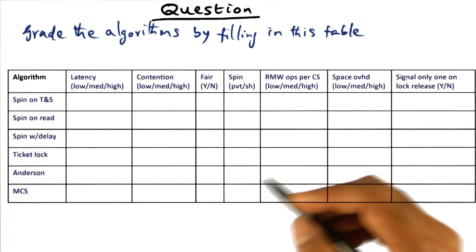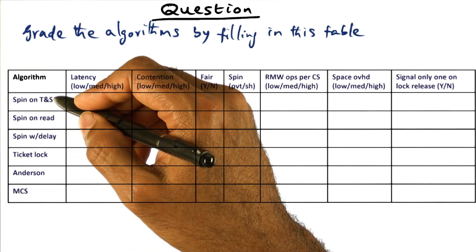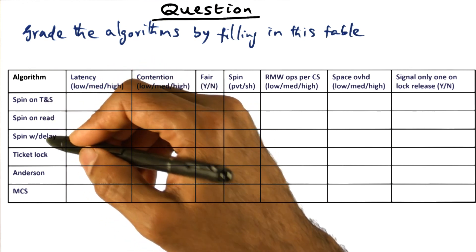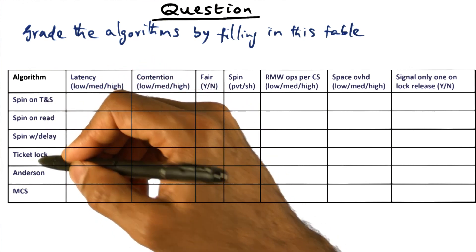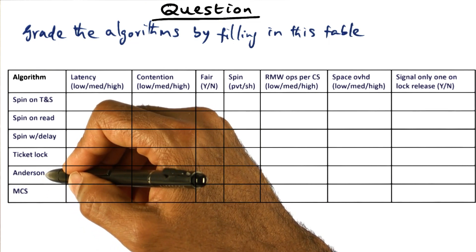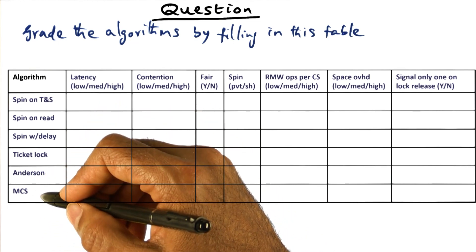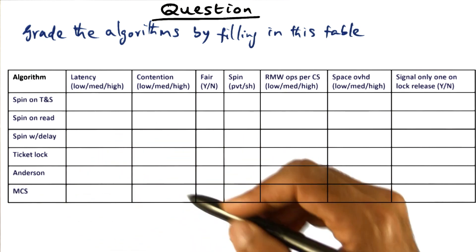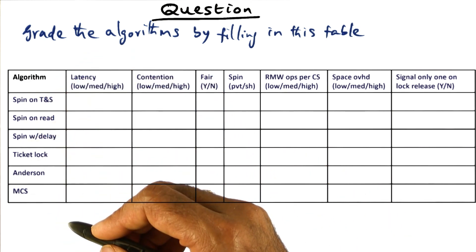What I want you to do is, we've talked about several different algorithms: spin on test and set, spin on read, spin with delay, ticket lock, Anderson's array-based QLock, and MCS link-based QLock. These are the different algorithms we've looked at.